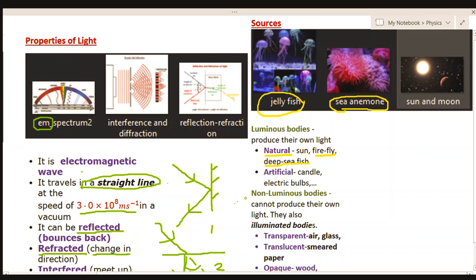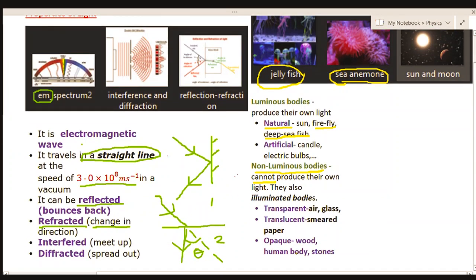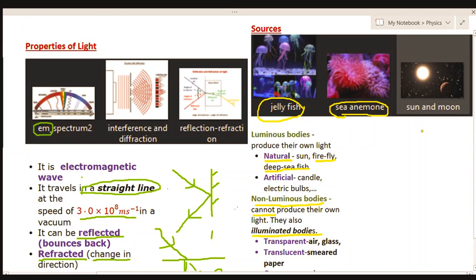Now we come to non-luminous bodies. Non-luminous bodies cannot produce their own light. They are unable to produce their own light. So how do we see them? We see them by illumination—when they get illuminated. That means when light from an external source falls on them. For example, how do we see the moon? If we go back to our diagram here, this is our sun and that is our moon.